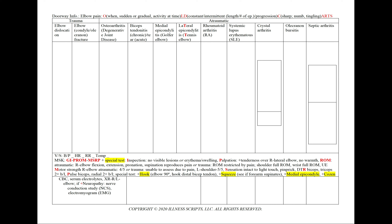To help characterize the pain, we'd like some descriptors — sharp or dull, among others. And since this can involve the nerves, we'll ask about any numbness, tingling, or motor weakness, aggravating and alleviating factors, radiation, treatments tried, and severity on a scale of 1 to 10. If there are no aggravating and alleviating factors or radiation, we'll state that in our patient note to show we've asked.